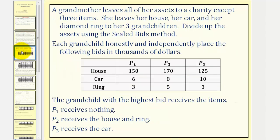Let's look at an example. A grandmother leaves all of her assets to charity except three items: her house, car, and diamond ring to her three grandchildren. We want to divide up the assets using the sealed bids method.